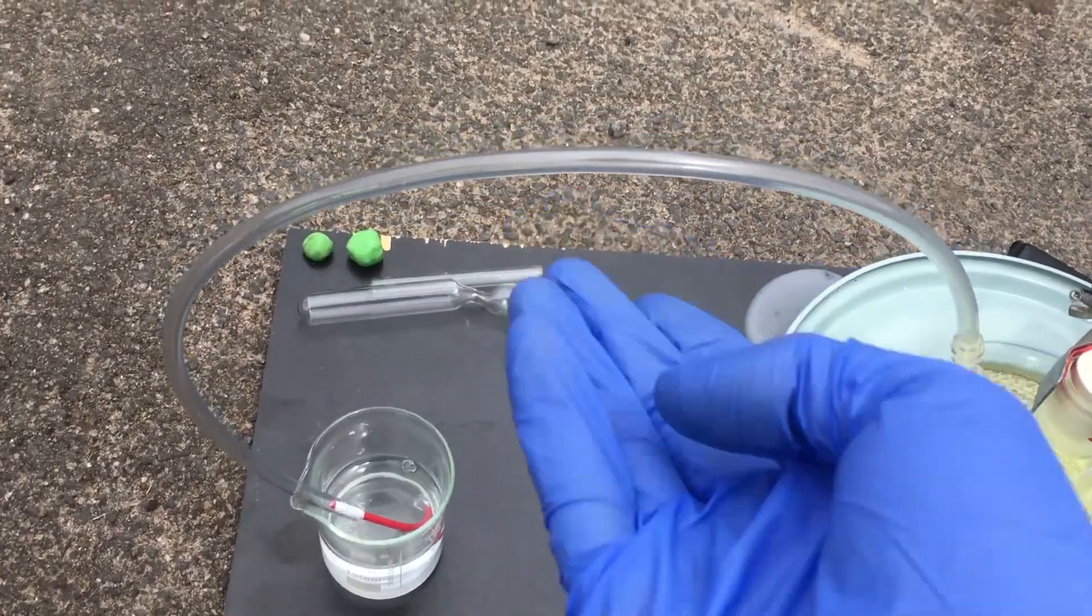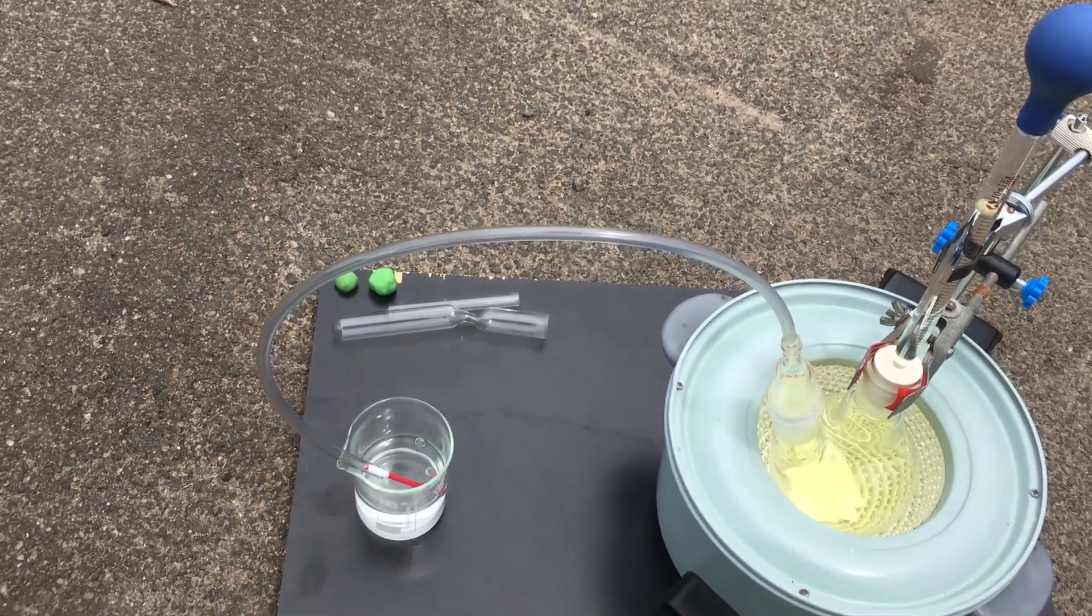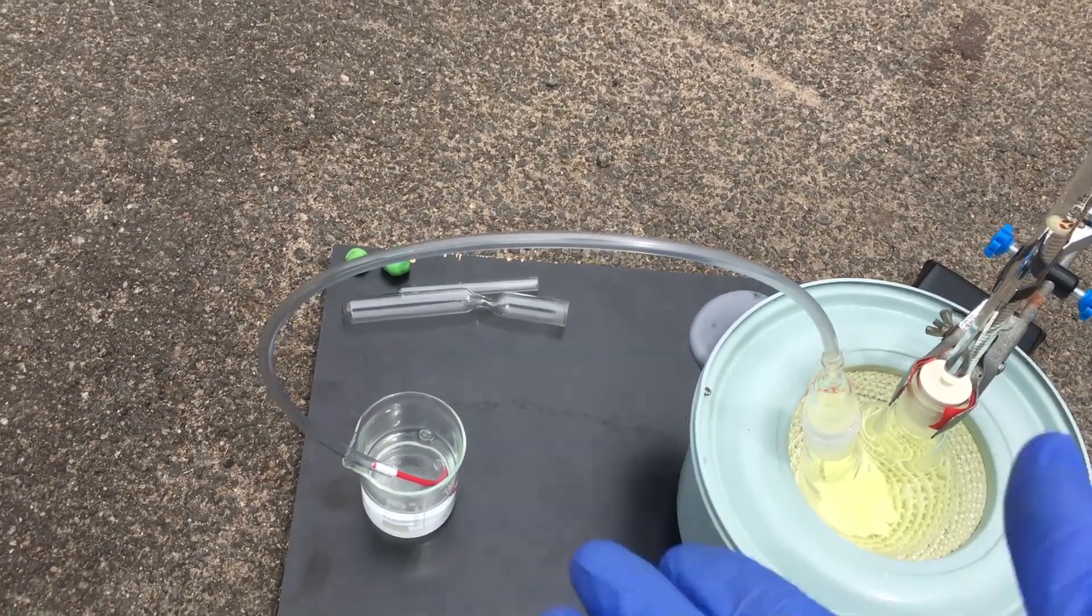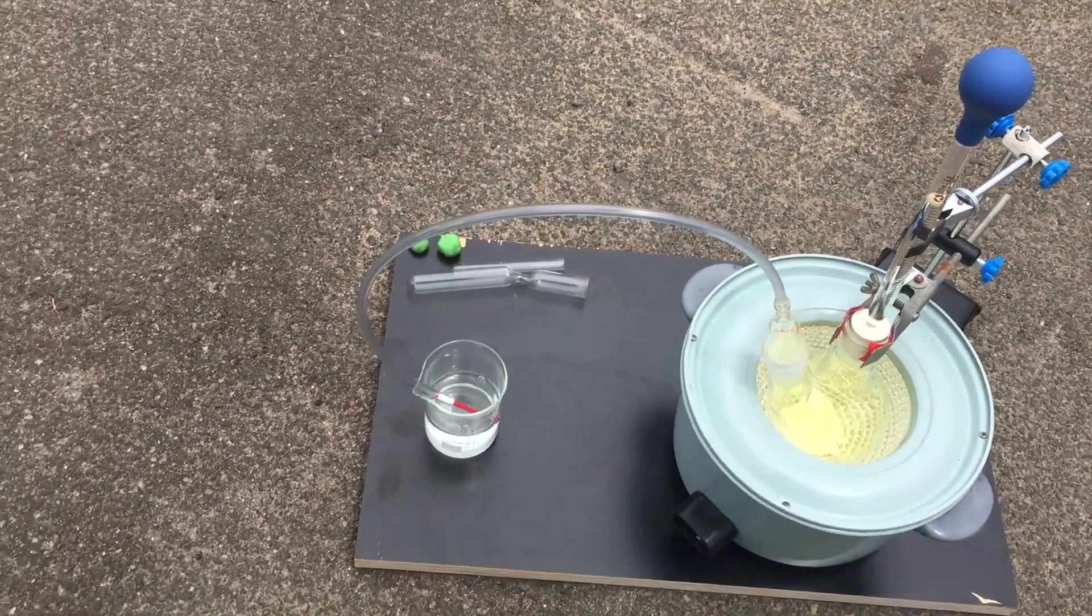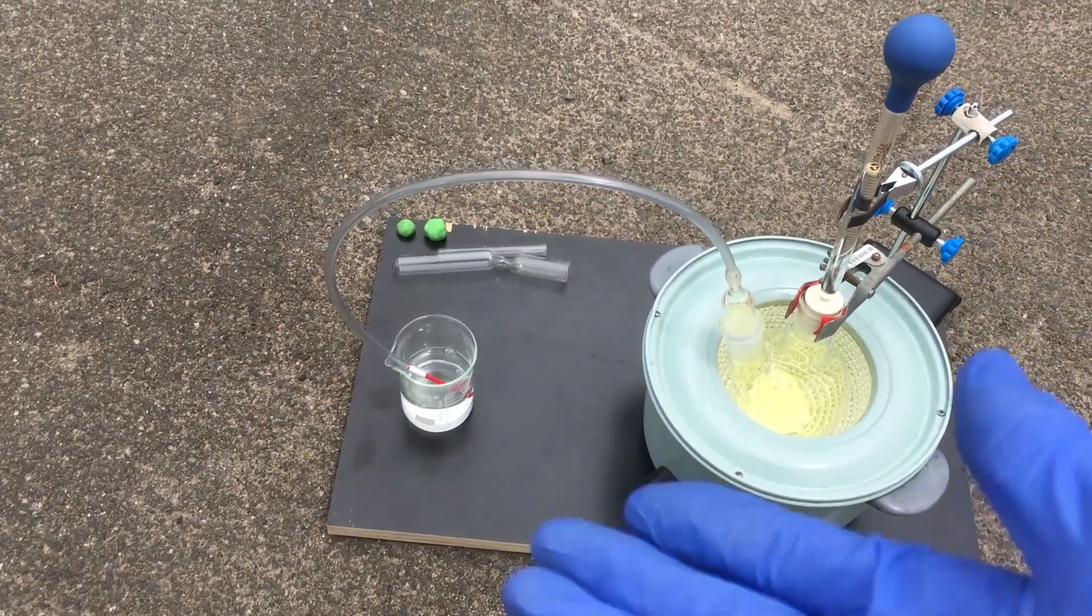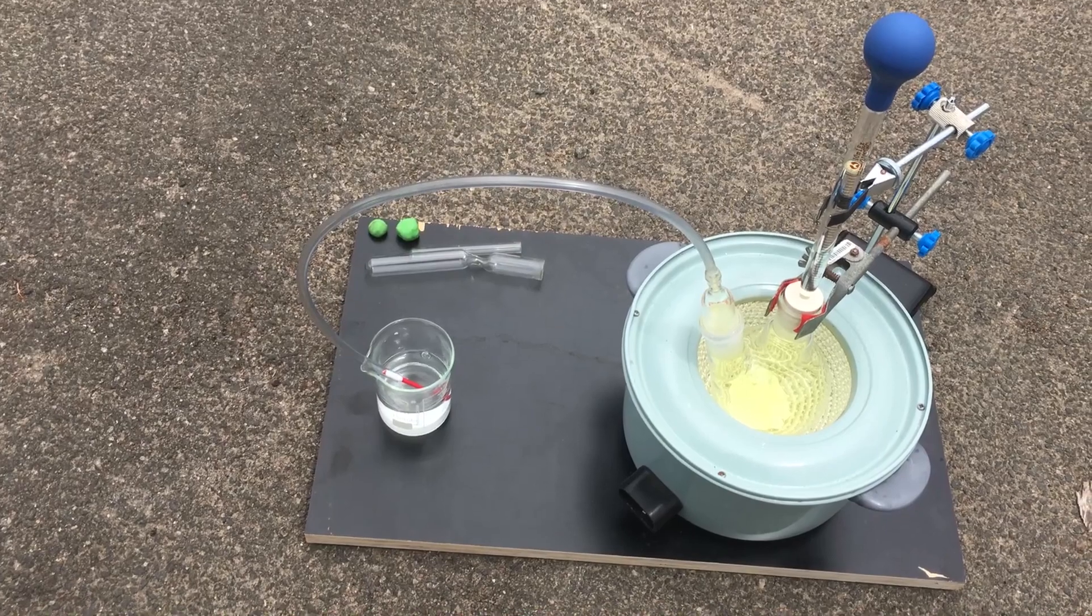Also, this vinyl tube is just pretty much sacrificial. It's in no way going to stand up to the chlorine running through. But really, it's so cheap. We'll just use it for this one time.